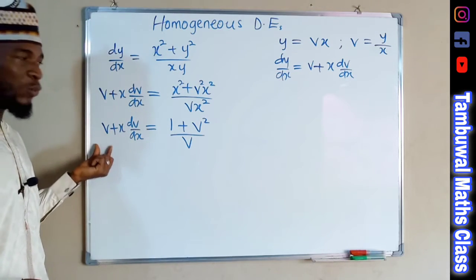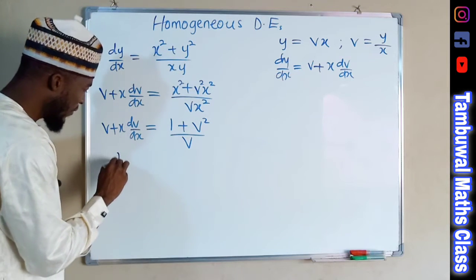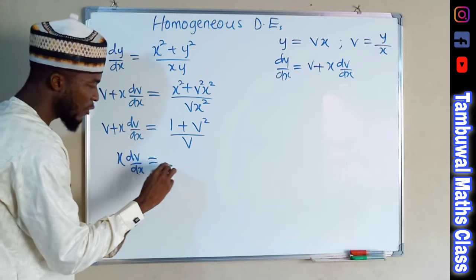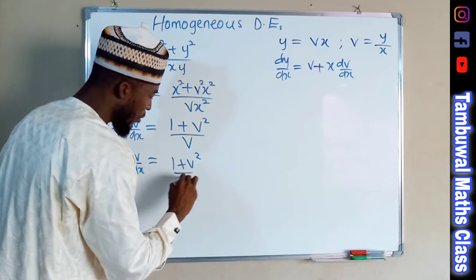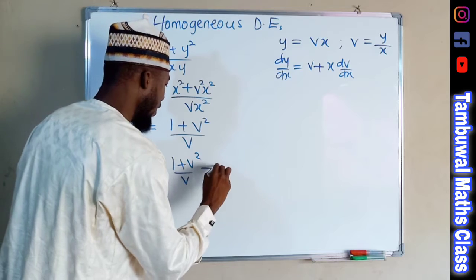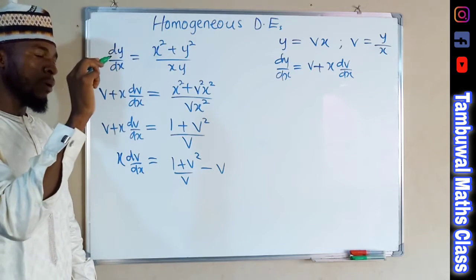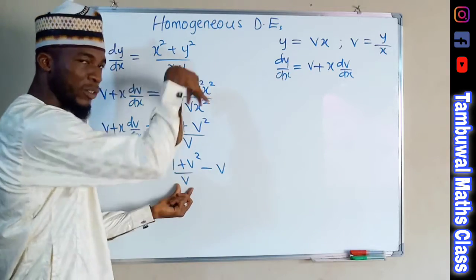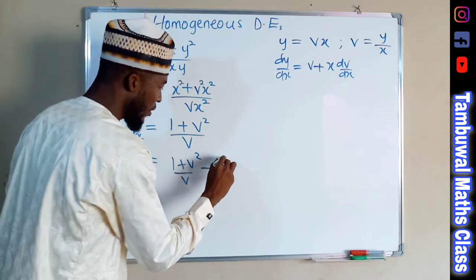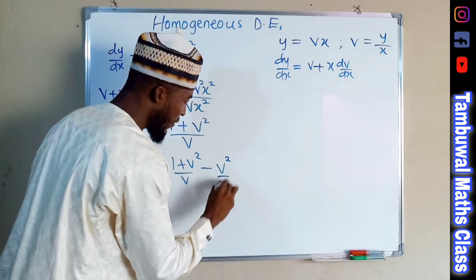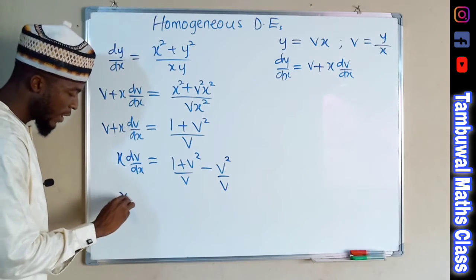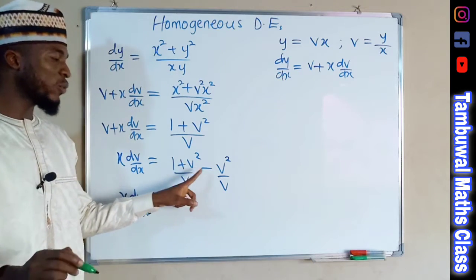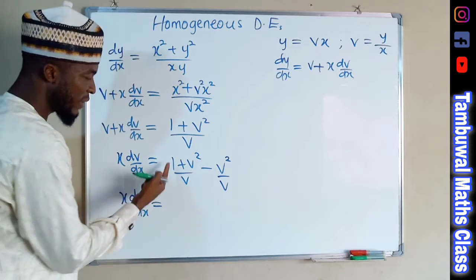We now take v to the right-hand side, leaving x dv over dx. This is equal to 1 plus v squared over v minus v. Writing v with a common denominator gives v squared over v, so x dv over dx equals v squared minus v squared, which is zero, leaving only 1 over v.